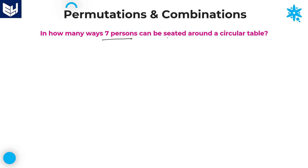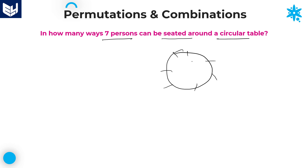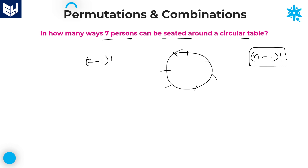Let's move on to the next question: in how many ways can seven persons be seated around a circular table? Total seven persons are there. To arrange seven persons on a circle, that is (7 minus 1) factorial ways, using the formula for arranging n members in a circle: (n minus 1) factorial.